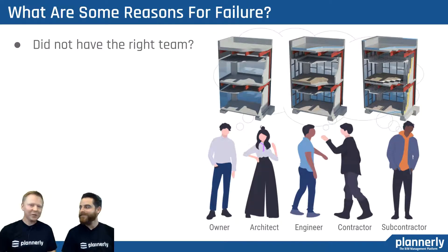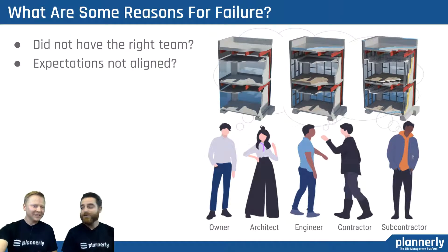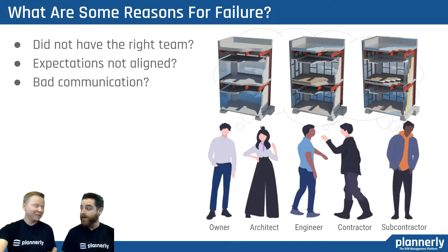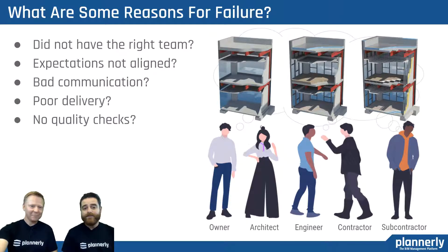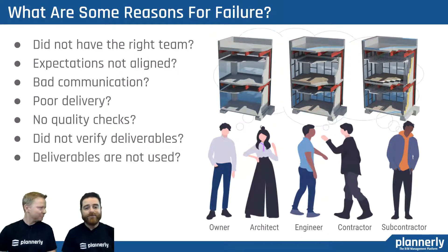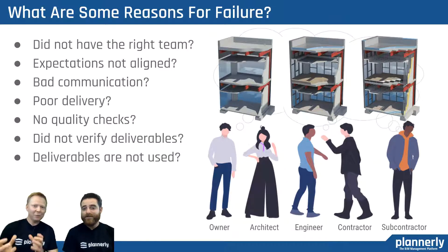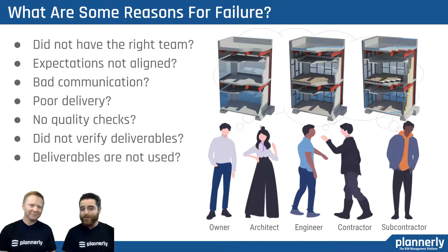So why are some projects starting like this, and what are those failures like? Well, sometimes we don't have the right team involved. Expectations aren't aligned. Bad communication — it can be really difficult to communicate, before or during the project. Deliveries are just not what we expected. There were no quality checks on deliverables, and then maybe we just didn't use it, even if it was verified. The contractor, architect, owner — maybe they did the BIM for the wrong reasons, and there was no use. Obviously, there was a lot of wasted time in that.